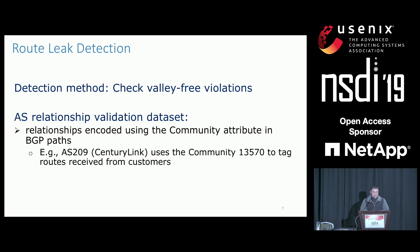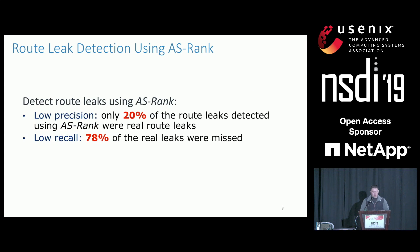With the validation dataset and the detection method for detecting route leaks, we can find real route leaks by checking valley-free violations in BGP paths. We applied the inference results of ASRank to detect route leaks and found that the performance of ASRank on route leak detection is surprisingly bad. It has low precision and low recall. Only 20% of the route leaks detected using ASRank were real route leaks, and it missed around 78% of the real route leaks.